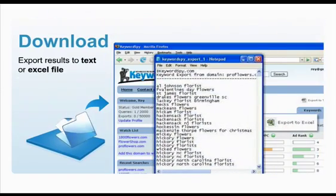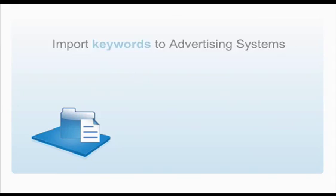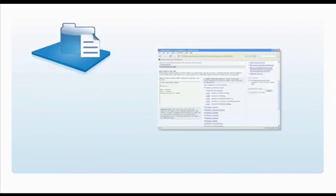Keyword Spy does not only show you your competitors' keywords, but also gives you the power to automatically export results to either text or Excel file format. With the competitors' keywords in your hand, all you need to do to start your own ad campaign is to copy and paste keywords in your selected advertising system, like Google AdWords for example, to achieve desired traffic and generation of leads and sales.